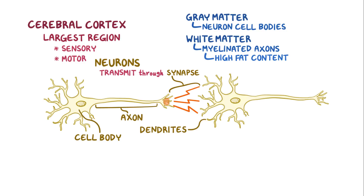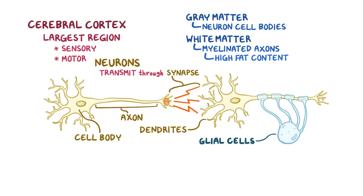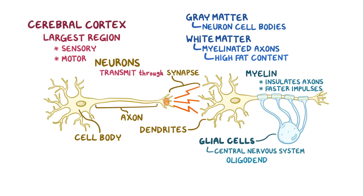Dendrites are the branches that first receive a neural impulse at a synapse with another neuron. The neural impulse passes through the cell body and goes through an axon, which projects information away from the cell body to another cell. Glial cells are support cells for neurons and they produce myelin to coat the axons. Myelin is a specialized membrane which helps insulate the axon to make neural impulses travel faster. Glial cells in the central nervous system are called oligodendrocytes, and glial cells in the peripheral nervous system are called Schwann cells.